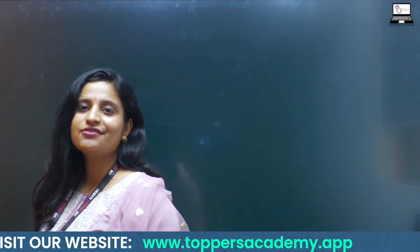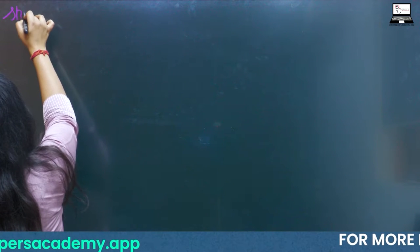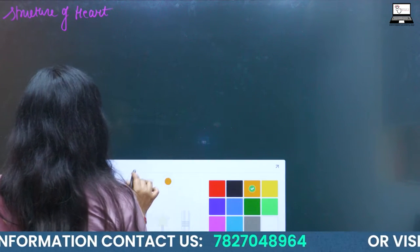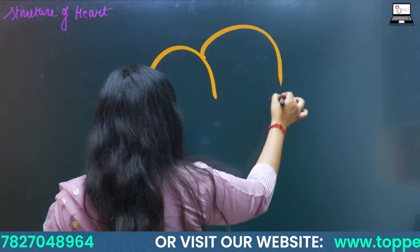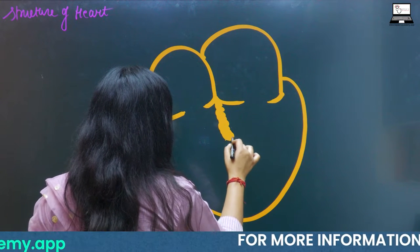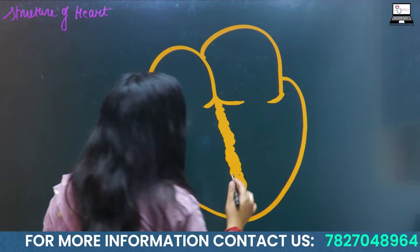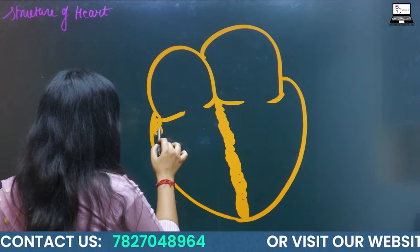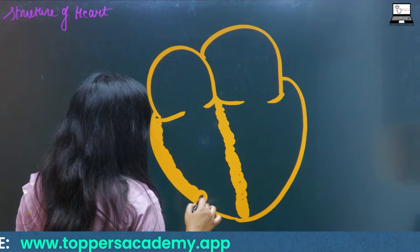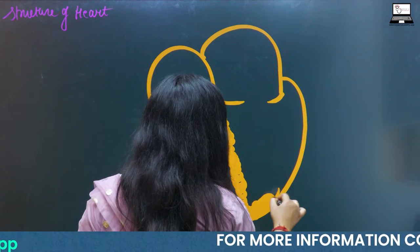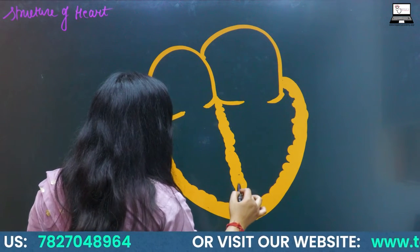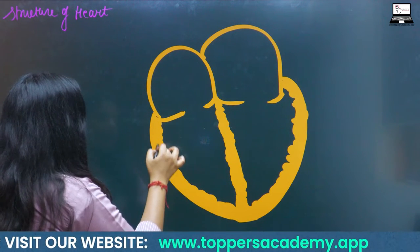Next we are going to talk about the structure of the heart. We have two auricles and two ventricles. The ventricles are present in the form of folds, known as the columnae carneae. The interatrial septum is thin, whereas the interventricular septum is thick because it contains more connective tissues and collagen fibers.